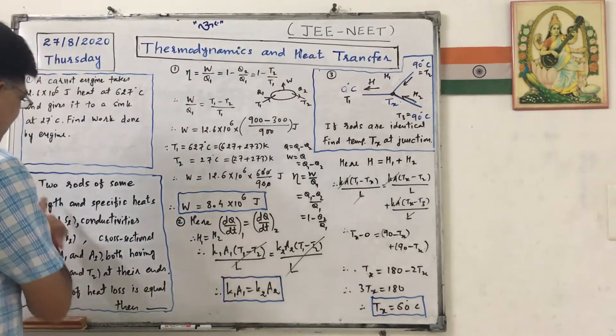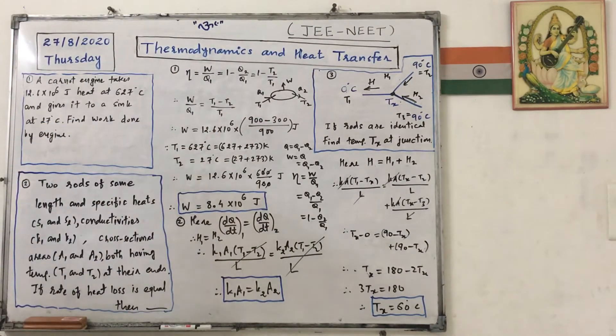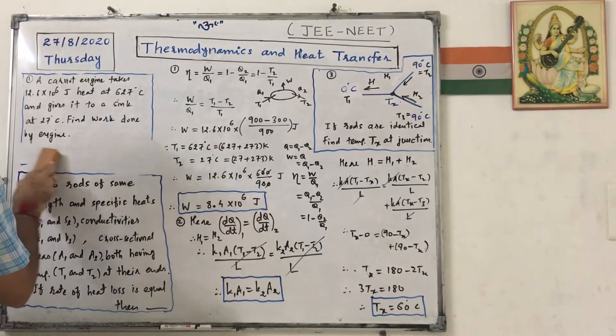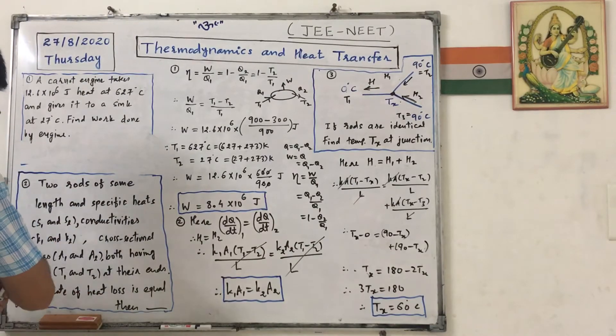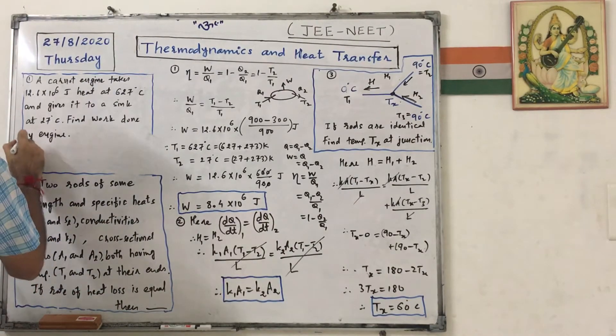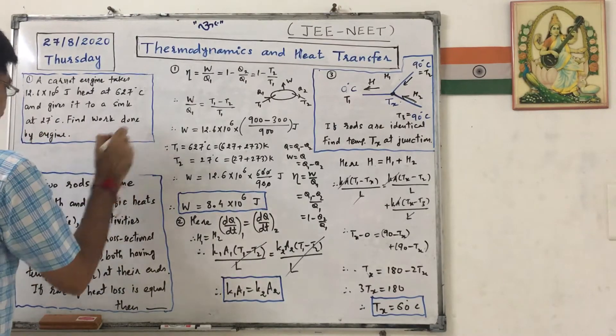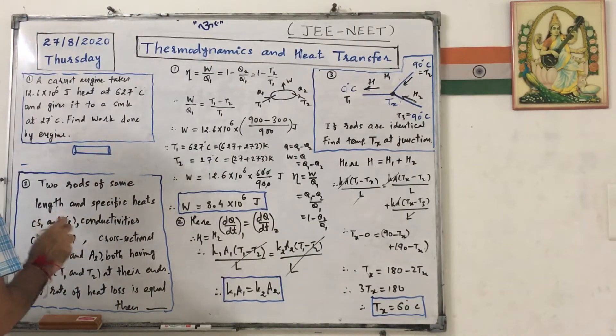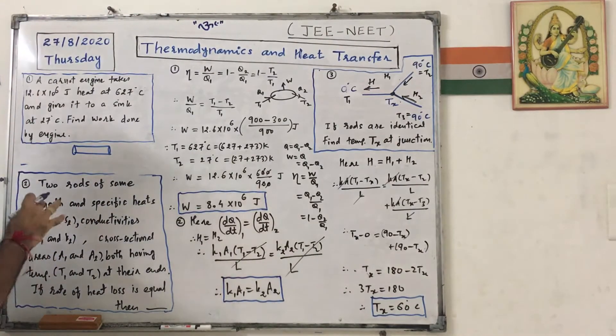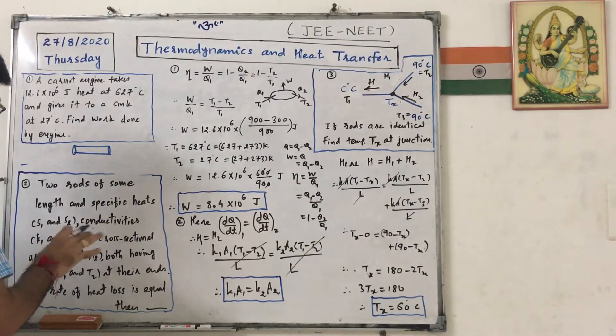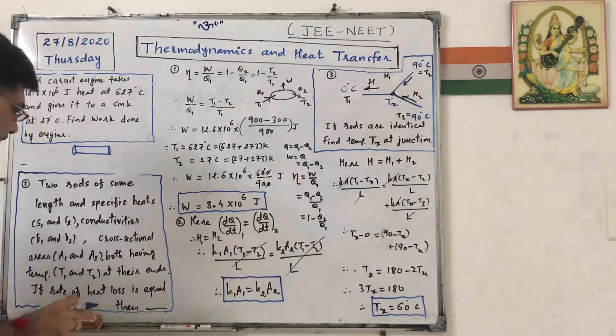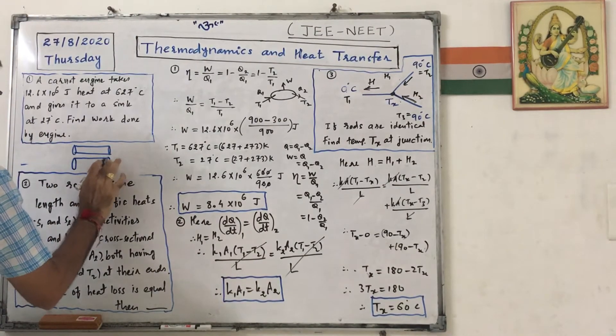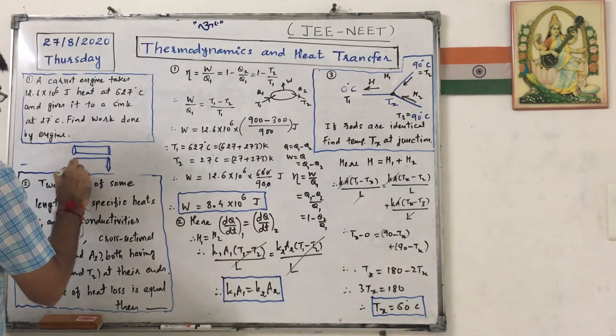Now second one is about heat transfer. Two rods of same length - here we have space, so we can figure. Two rods of same length, same specific - same length, specific - conductivities K1, K2, so materials are different. Cross-sections are different, so I have to do like this. Lengths are same, but cross-sections are different. Temperatures at the end are T1 and T2.